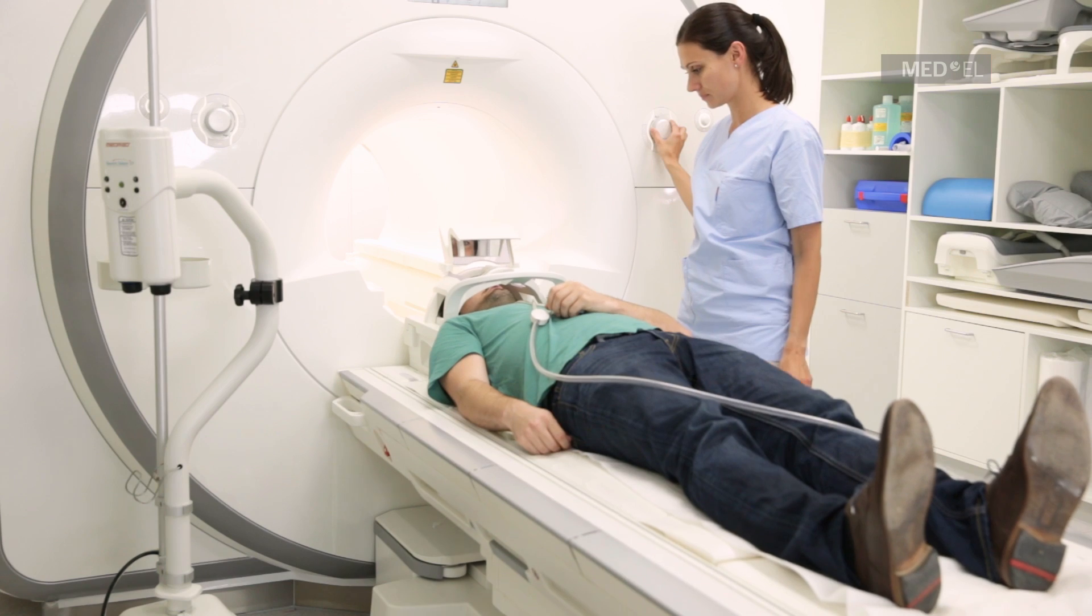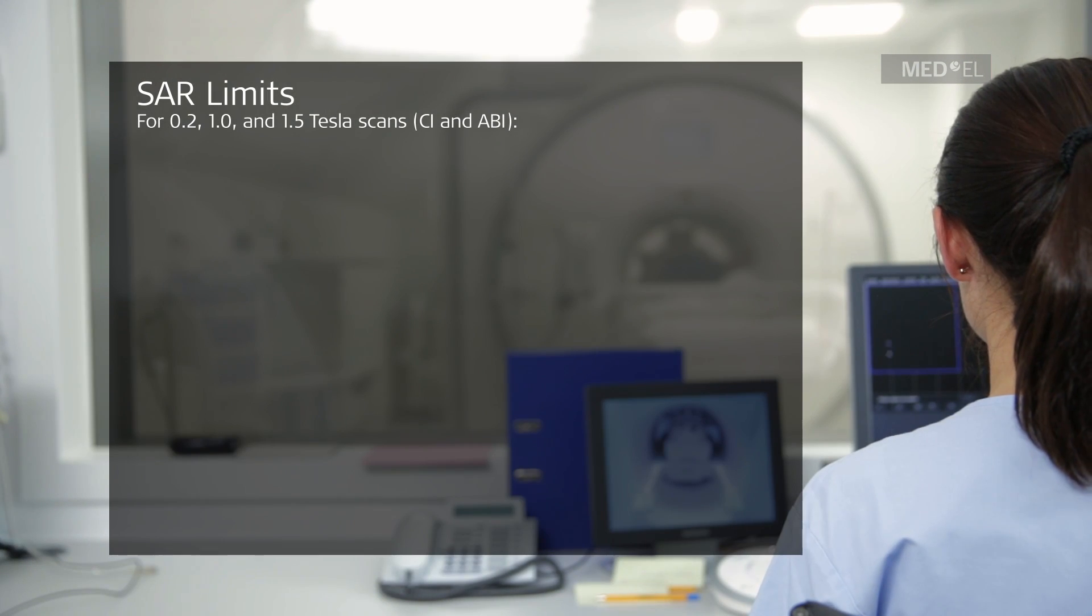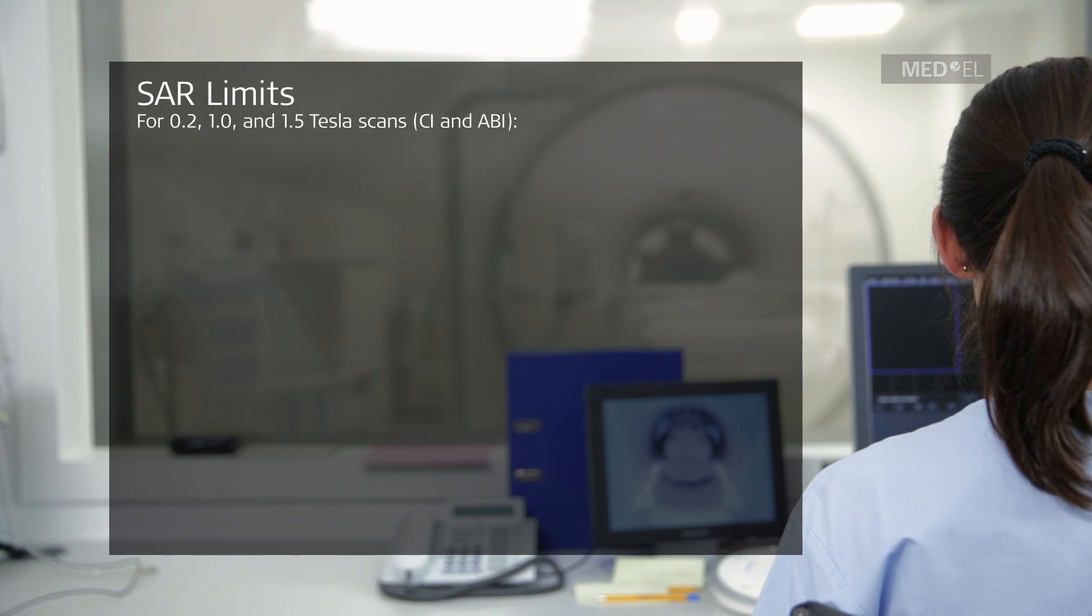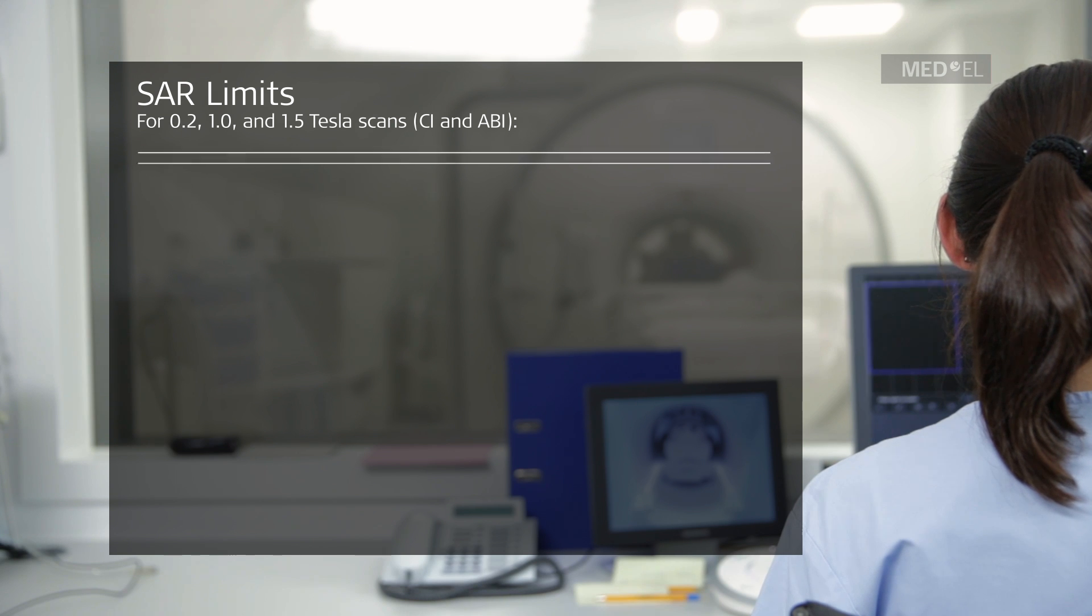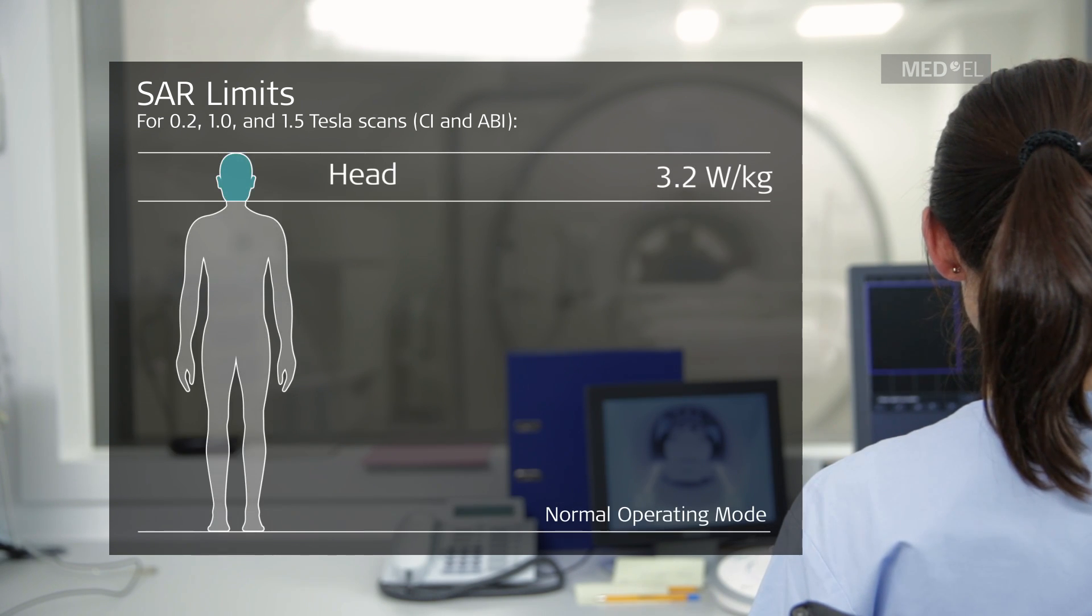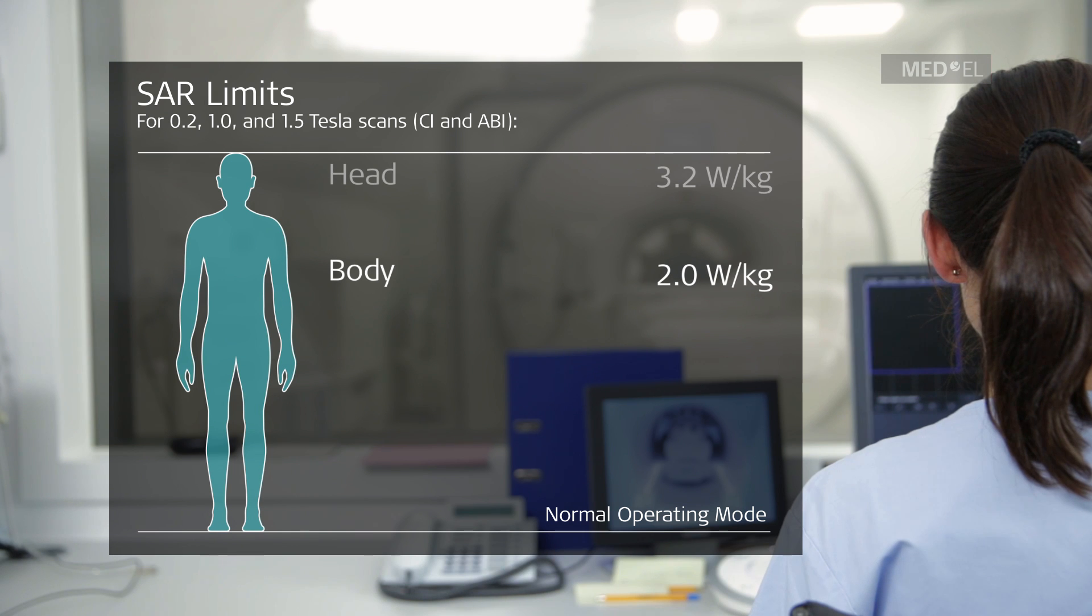Following SAR limits apply for the synchrony implant. For 0.2, 1, and 1.5 Tesla scans, run sequences in normal operating mode only. This means a head SAR limit of 3.2 Watt per kilogram and a whole body SAR limit of 2 Watt per kilogram.